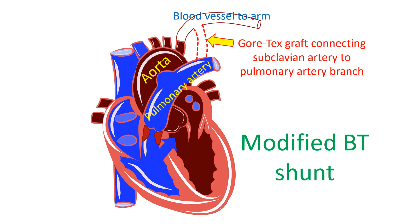In BT shunt, because the aorta at high pressure is connected to the pulmonary artery at low pressure, sometimes blood flow to the lungs can be much more than is needed. This can damage blood vessels of the lungs in the long run. Hence modifications of the BT shunt, known as modified BT shunt, have been developed.